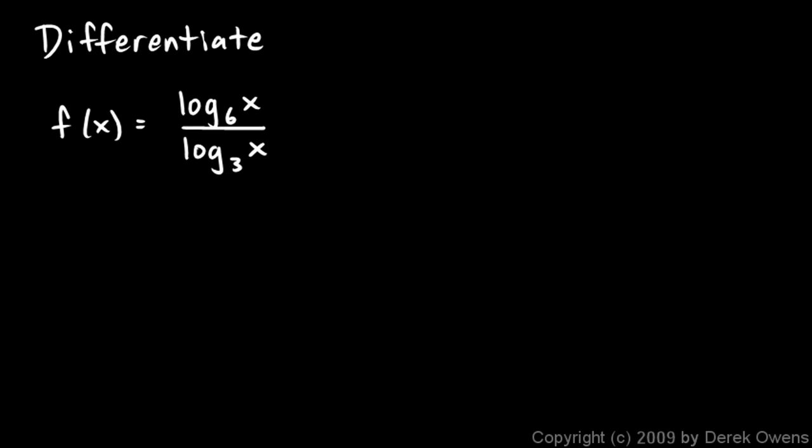Okay, we're still differentiating base B logarithms. This one we're told to find the derivative of log base 6 of x over log base 3 of x, so this will involve the quotient rule. So f prime of x...